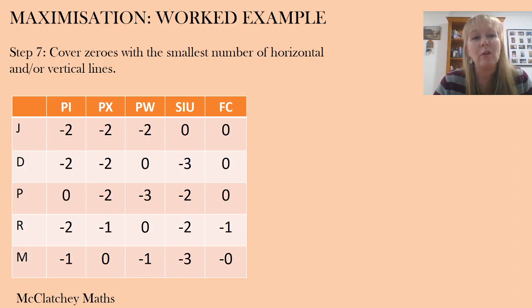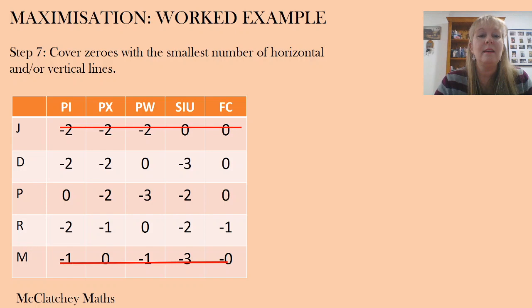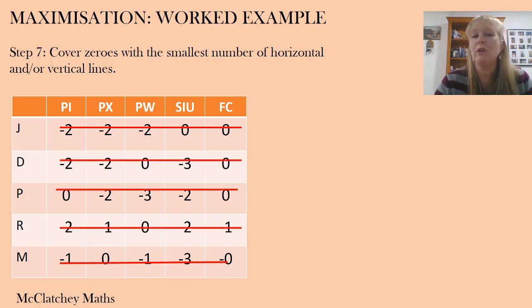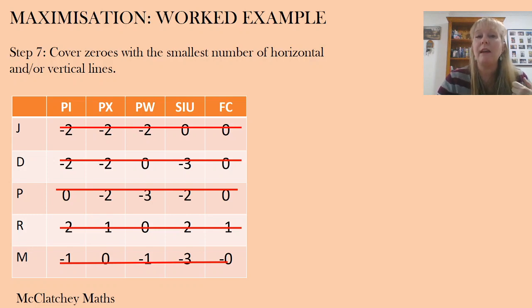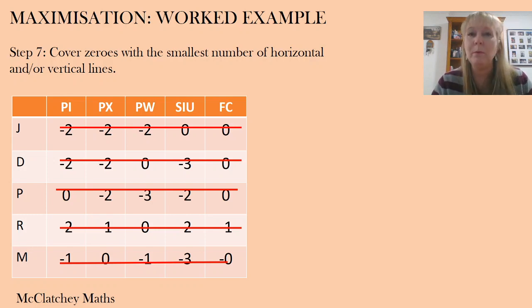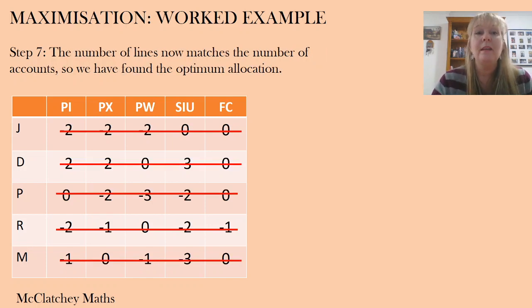Now we're ready to cover those zeros again with the smallest number of horizontal and/or vertical lines. Passing lines through here, here, here, here, and here — the minimum is five this time. I've now achieved my goal: the smallest number of lines that can cover all zeros is now equal to the number of tasks, people, or stores I need to allocate to. So we've found our optimum allocation.